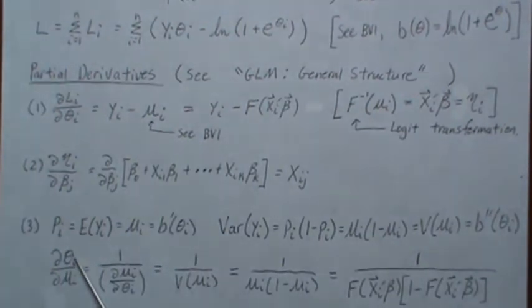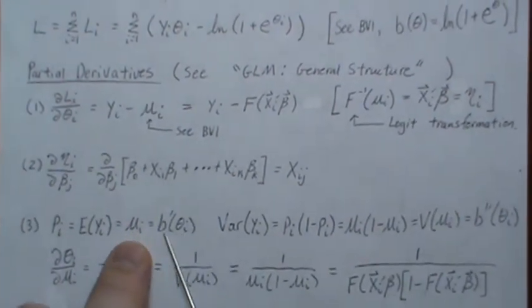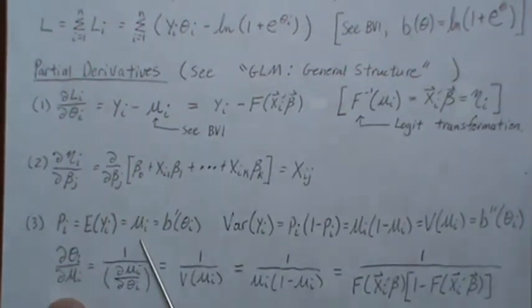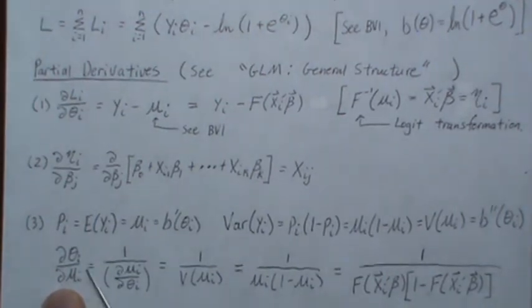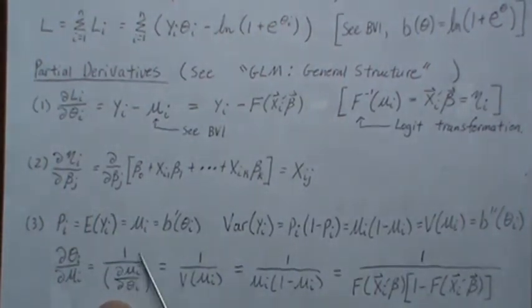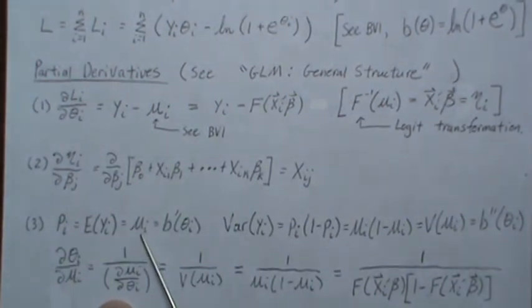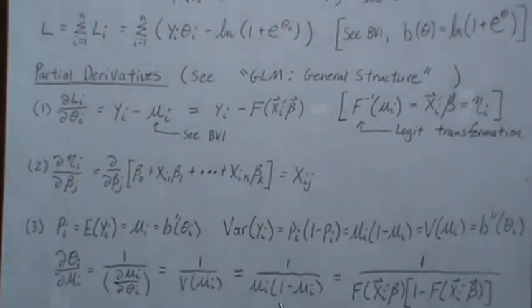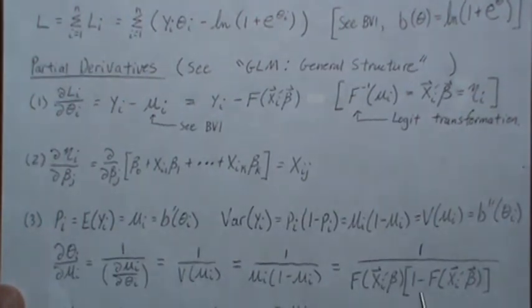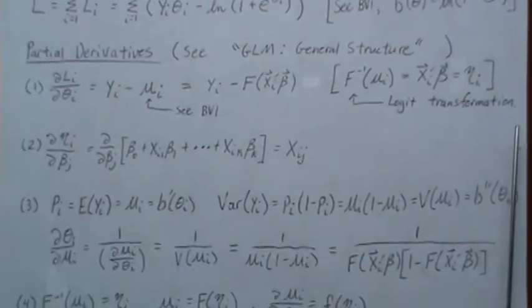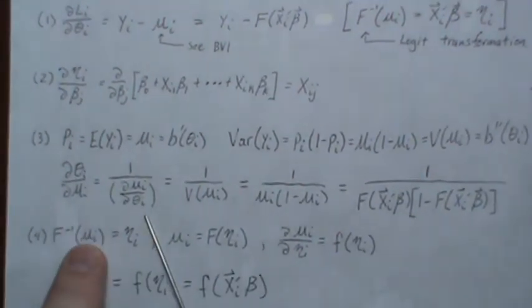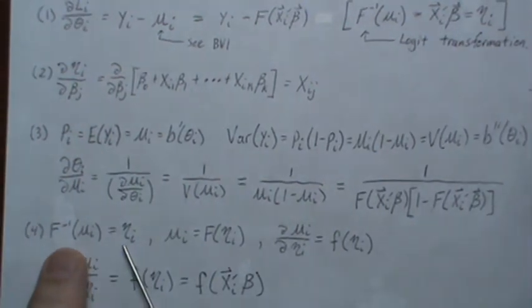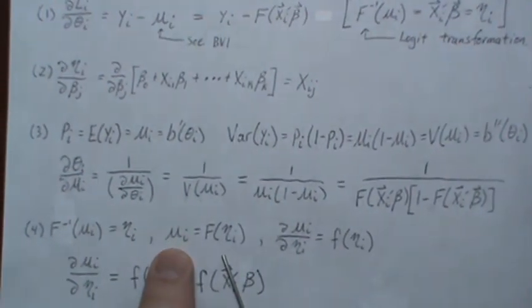Now to find the derivative of theta with respect to mu_i, notice that theta is not by itself. But in BV2 we showed this is a strictly increasing function, so we could take the inverse and get theta_i by itself as a function of mu_i. But since they're inverse functions, there's a nice property that says we can just take the reciprocal and take this derivative. And this derivative is already in the correct form. So the derivative of mu_i with respect to theta_i would be the second derivative, which is the variance function, which is mu times one minus mu, which on page one was F of this linear combination times one minus F of that linear combination.